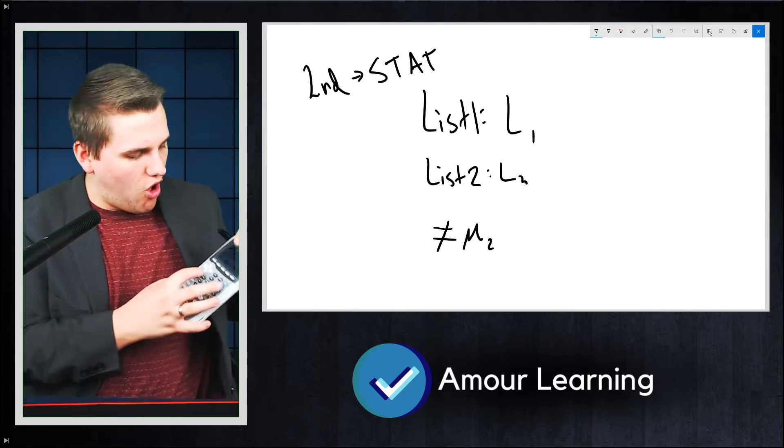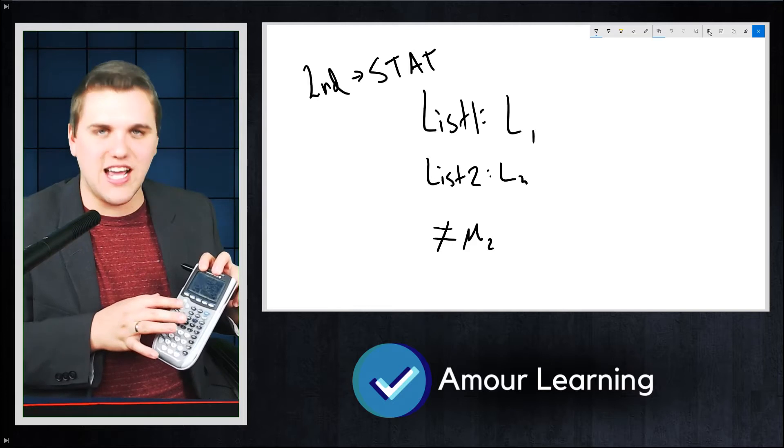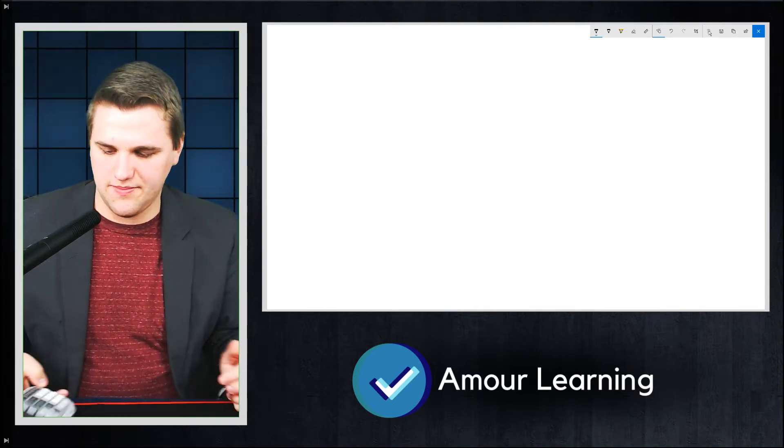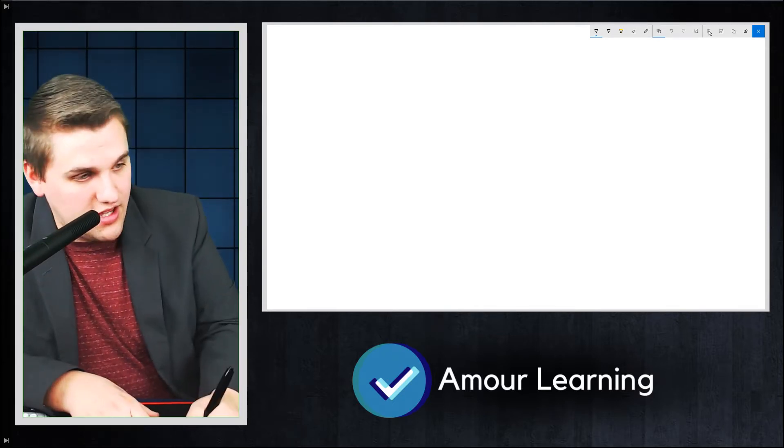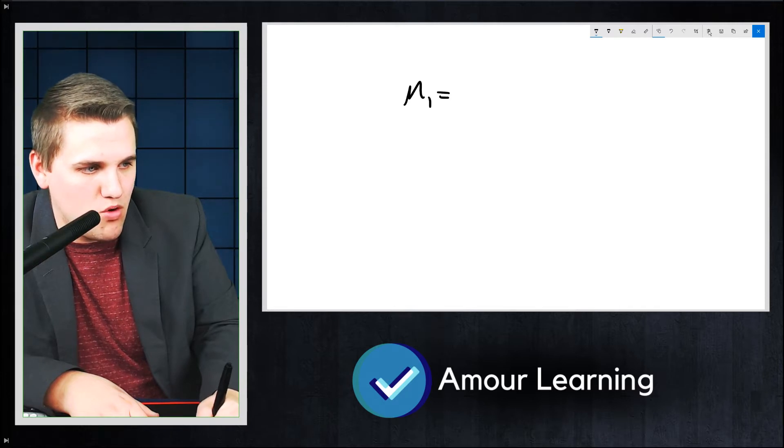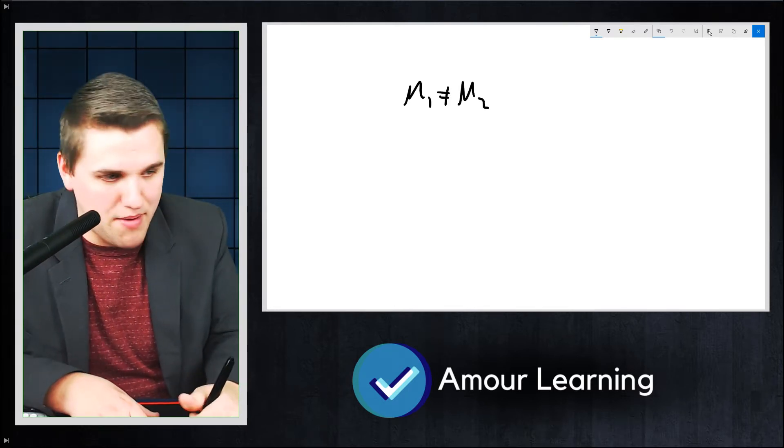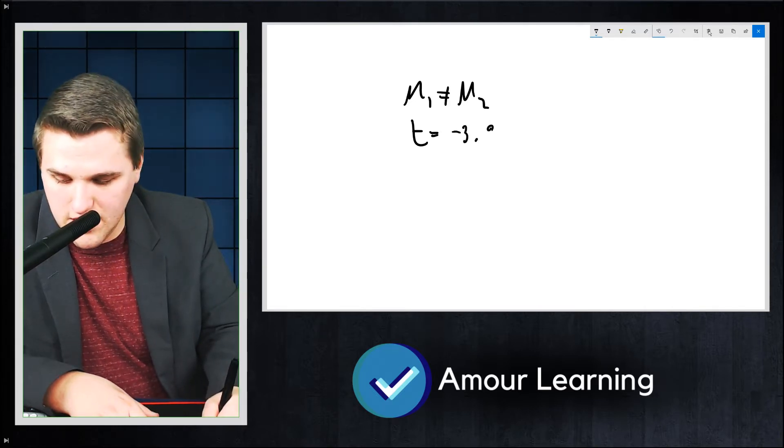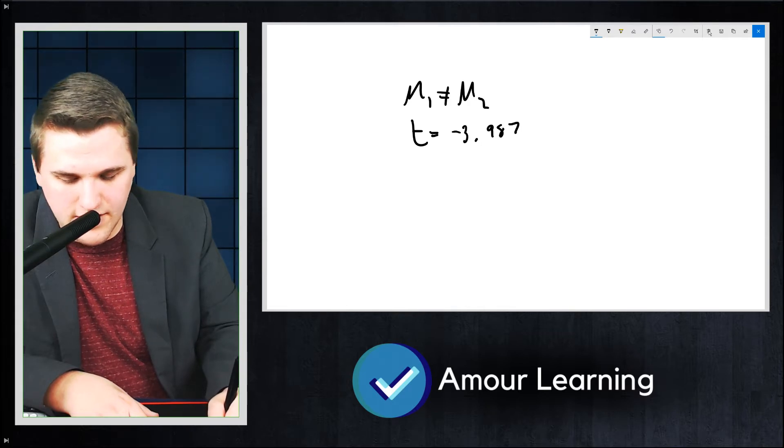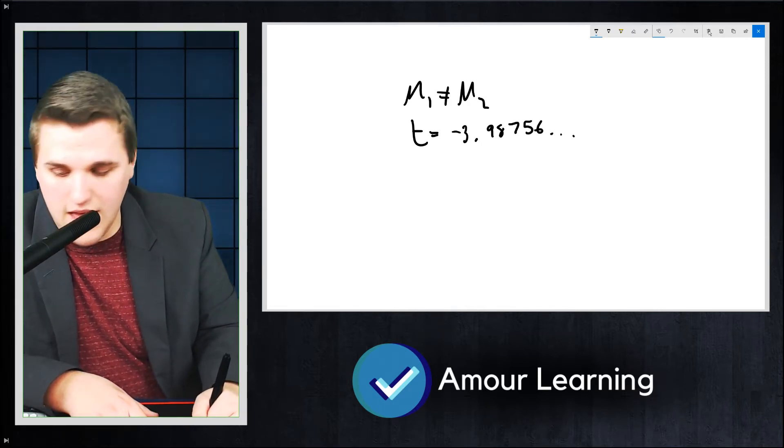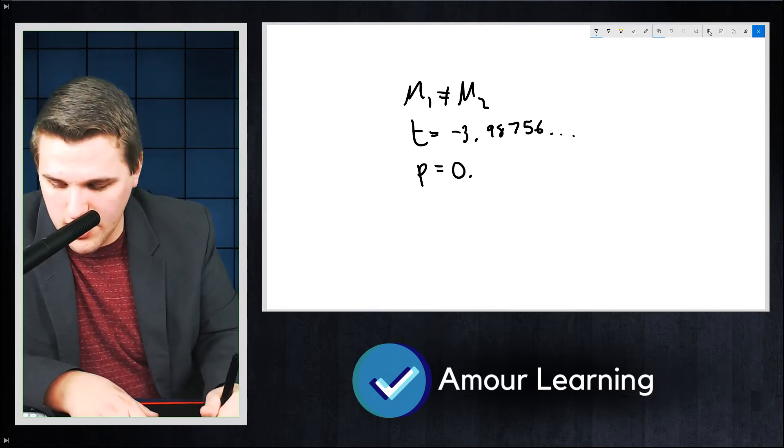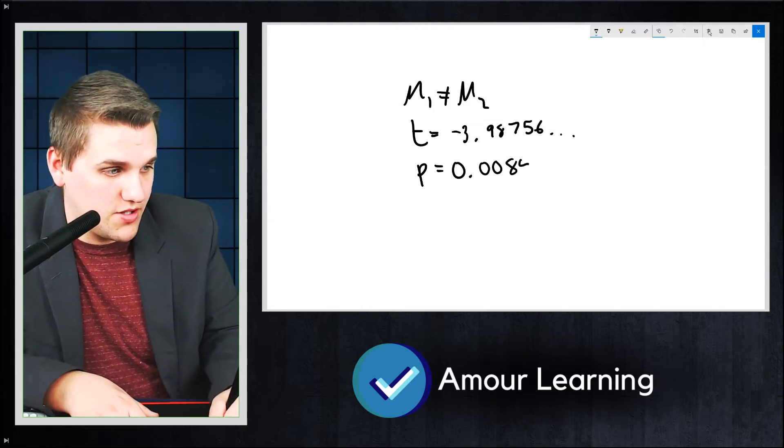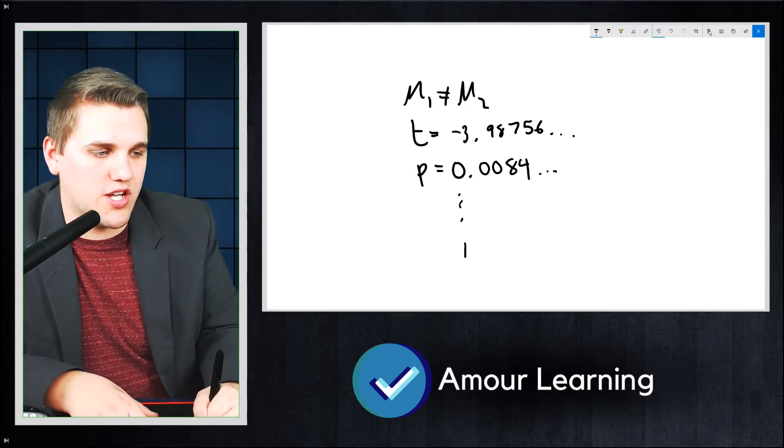And then if you scroll all the way down, you will see calculate. And you have to hit the down arrow quite a bit. You'll see calculate. And then I'm going to tell you what you see after that. So I see this menu right here. Mu1 does not equal mu2 is the alternative hypothesis. T equals negative 3.98756 and so on. And then P equals 0.0084 and so on. And then you see some other stuff down below.